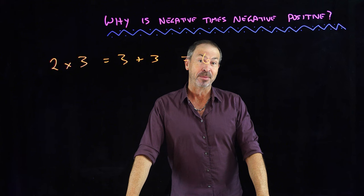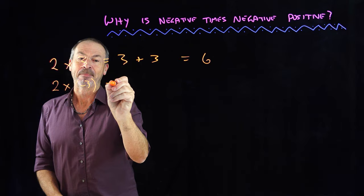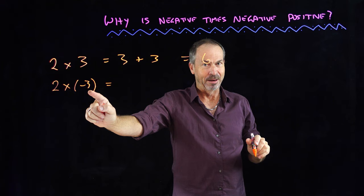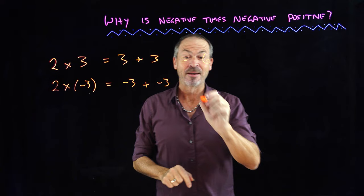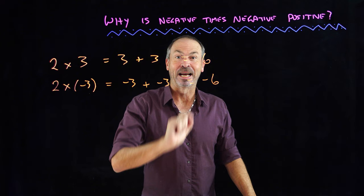Let's now introduce some negative numbers. Let's do positive times negative — say, two times negative three. Following the same reasoning, I interpret this as two groups of negative three: a negative three and a second negative three. Negative three and negative three together make negative six. So positive times negative gives a negative answer.